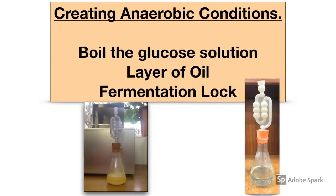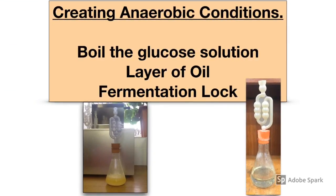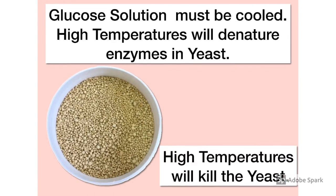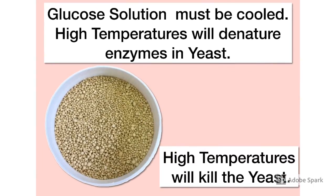How did we create those anaerobic conditions? The first thing we did was boil our glucose solution, as boiling drives out oxygen. Then we placed a layer of oil after adding the yeast, and placed a fermentation lock on top of the conical flask. It's important to state that the glucose solution was cooled before the yeast was added, because high temperatures will denature enzymes — and yeast contain many enzymes — and high temperatures might also kill the yeast cells themselves.